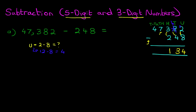As for the thousands and the ten thousands, well we're subtracting zero, so therefore they will not change. And we have arrived at our answer — it is forty-seven thousand, one hundred and thirty-four. It really is that simple. It just requires practice and following the same principles we've used in several tutorials now.